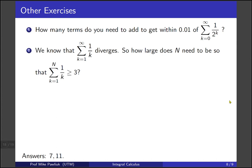So here are two other exercises that you can try. How many terms do you need to add to get to within 0.01 of the infinite sum 1 over 2 to the k? We know that the harmonic series 1 over k diverges, so how large does n need to be so that the partial sum of 1 over k's from k equals 1 to n is larger than 3? We know it diverges, so it has to be bigger than 3. At what point does it get bigger than 3?